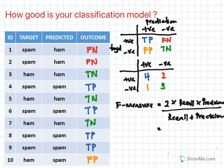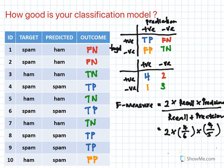For our example, F-measure equals 2 times recall (which is 4 over 6) times precision (which is 4 over 5), divided by recall (4 over 6) plus precision (4 over 5). That gives you the F-measure for this case.